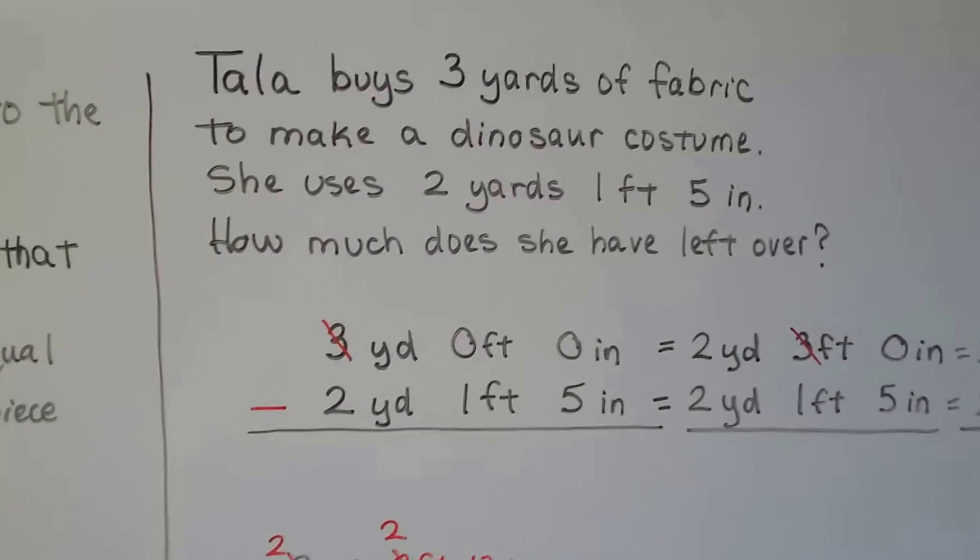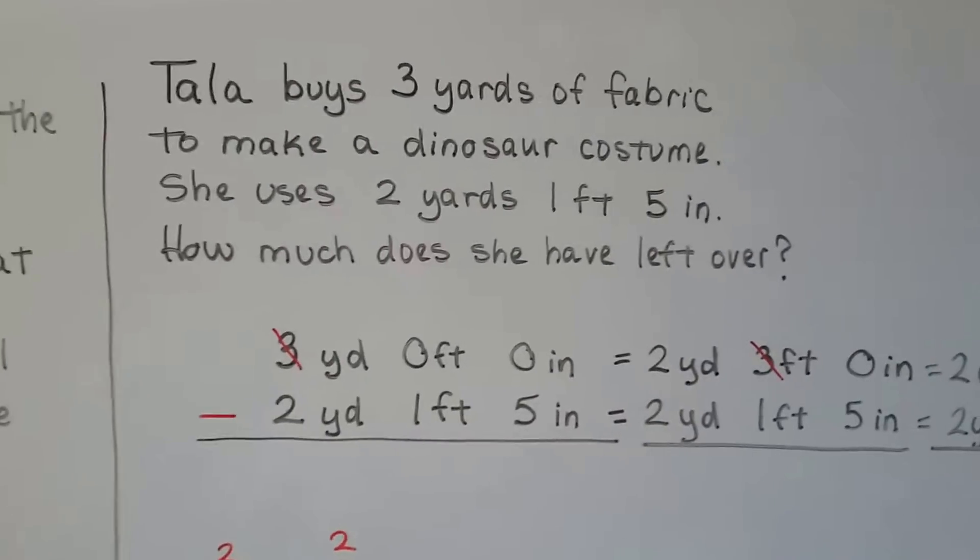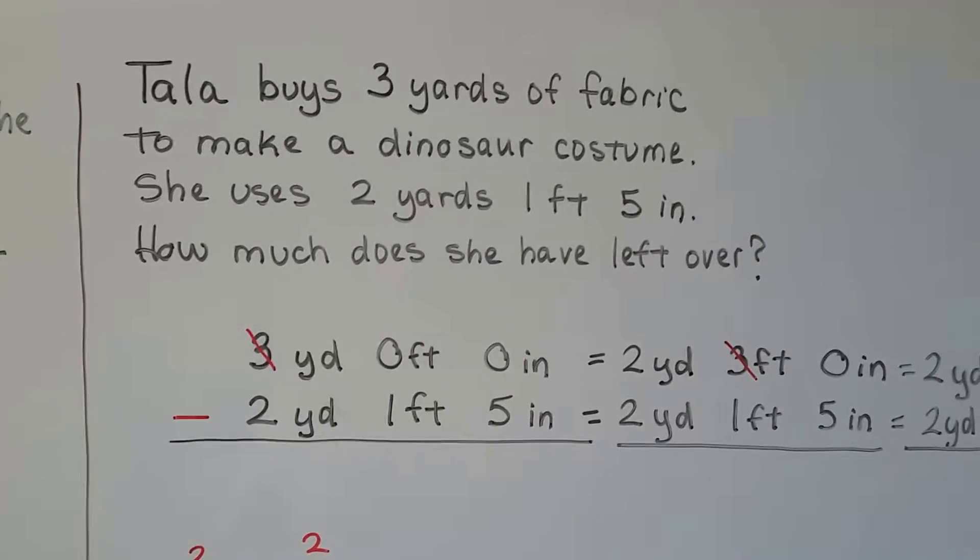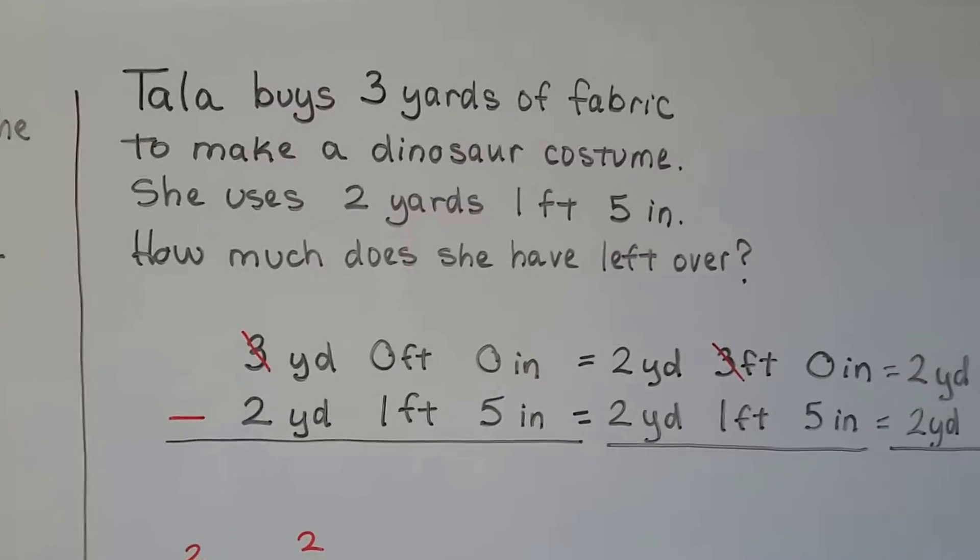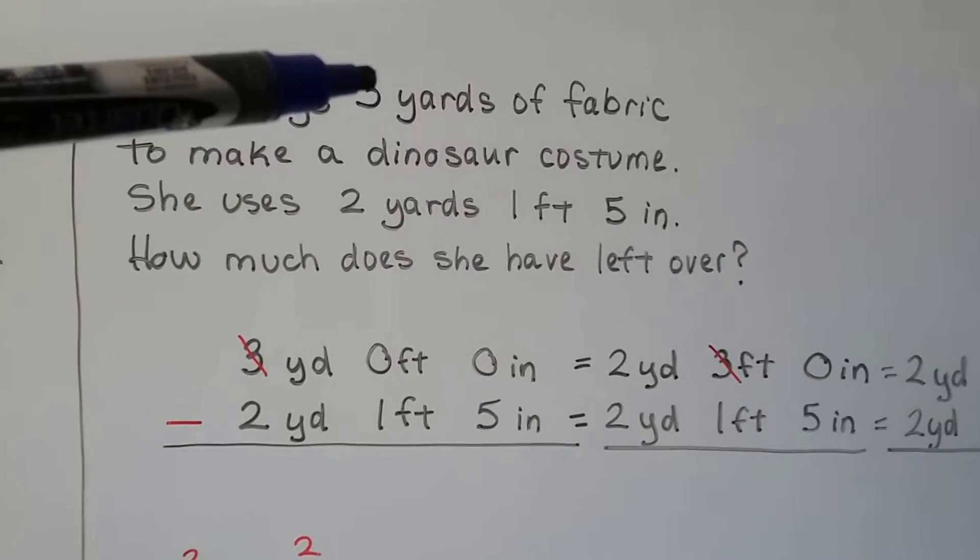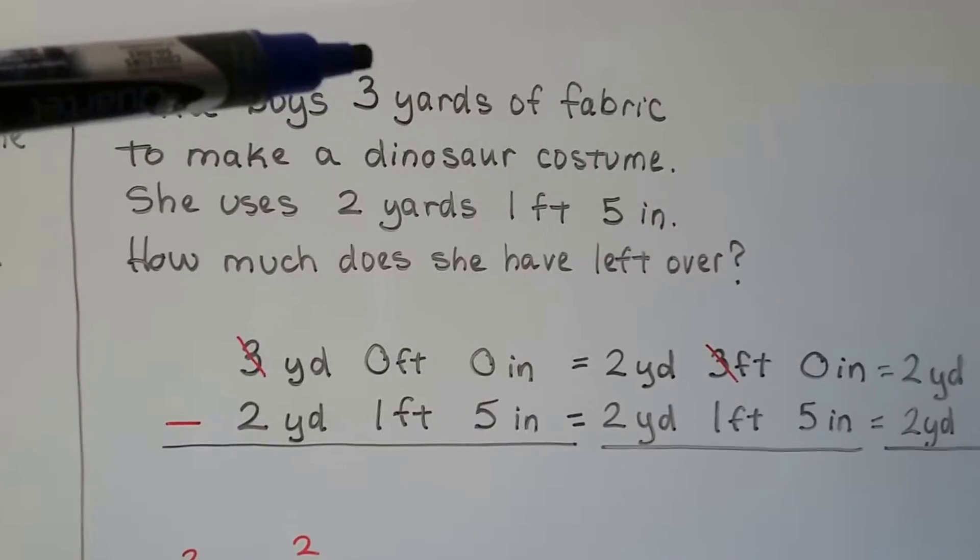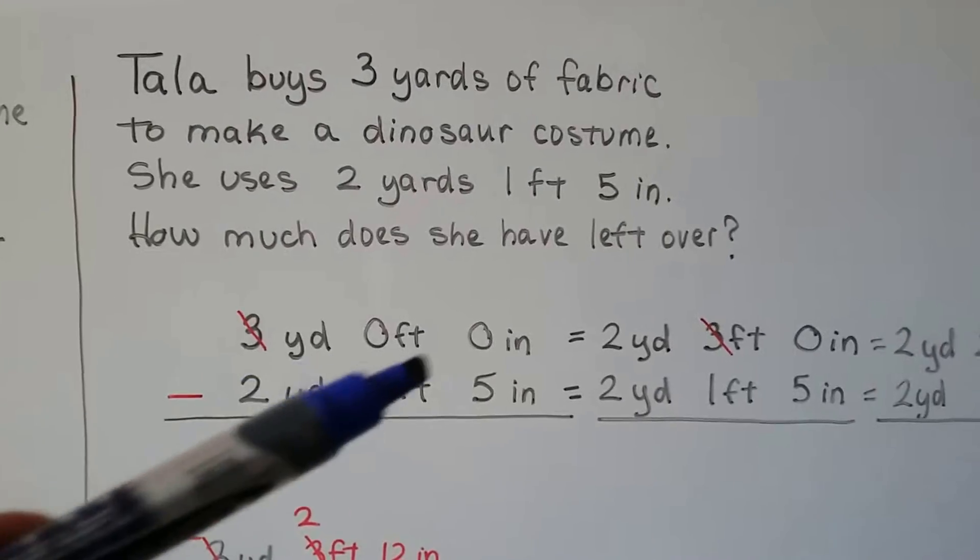Tala buys 3 yards of fabric to make a dinosaur costume. She uses 2 yards, 1 foot, and 5 inches. How much does she have left over? So she had a straight 3 yards. No feet, no inches. It was just 3 yards. So 0 feet, 0 inches.